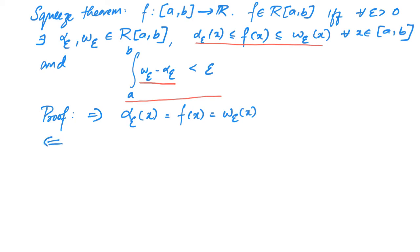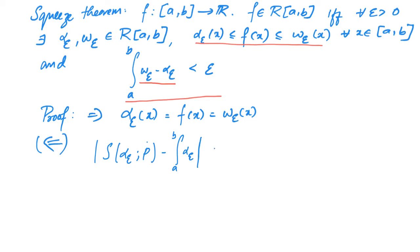Now let us see how to prove the other implication. Pause the video and recall the result that if f(x) ≤ g(x) for every x in [a,b] then the integral from a to b of f is less than or equal to the integral from a to b of g, because the proof here is very similar to that proof. Now since alpha_epsilon and omega_epsilon are integrable, for every epsilon greater than zero there exists a delta of epsilon such that if norm of P-dot is less than delta, then |S(alpha_epsilon, P-dot) − ∫_a^b alpha_epsilon| is less than epsilon.